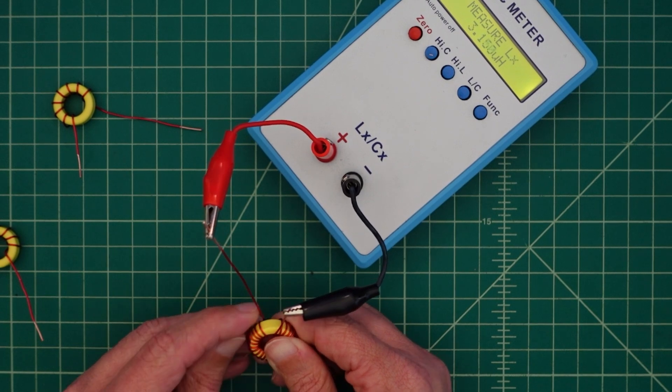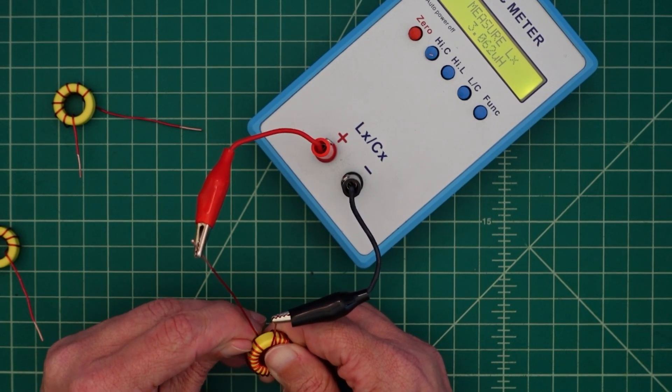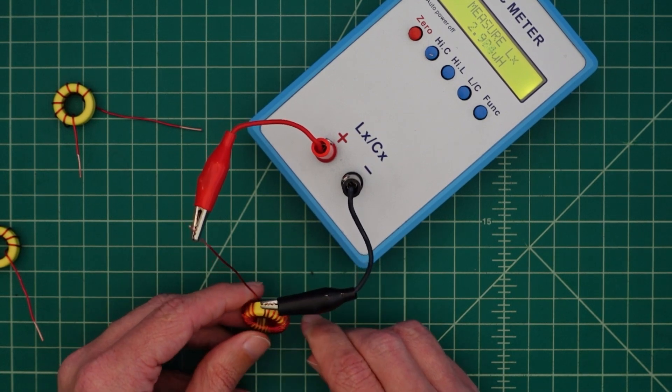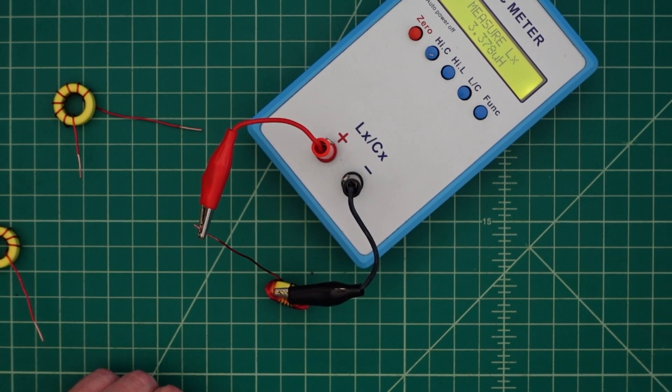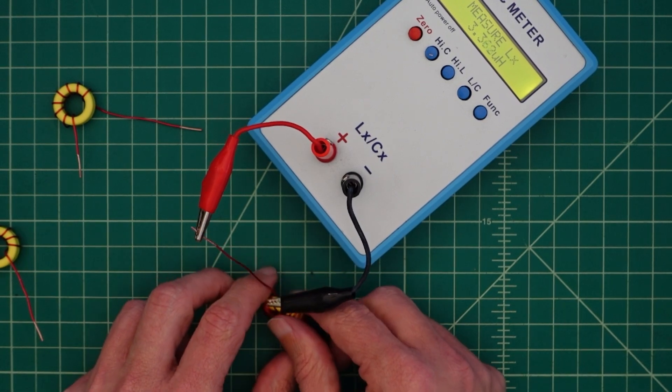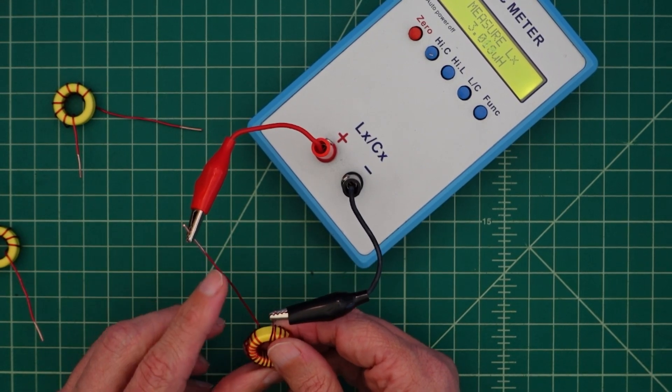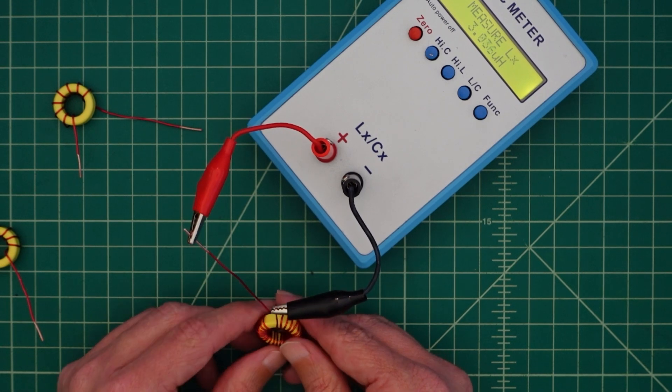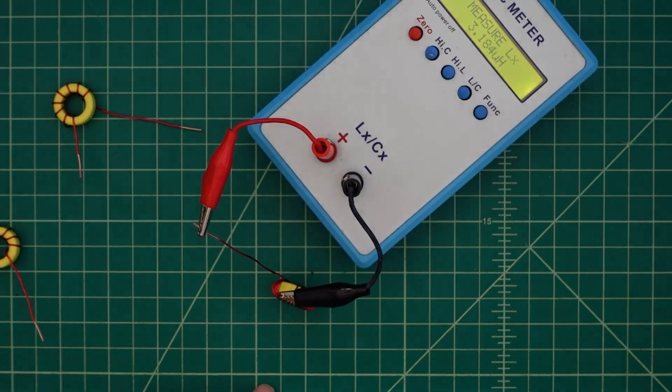If I move these windings around a little bit, you can see my values changing and we're getting closer to where we want to be. Well maybe not so much. What I'm going to do is I'm going to take a winding off, and then I'm going to trim this leg up, and then I'm going to re-scrape it. We're going to come back and do a measurement and see how close we are.